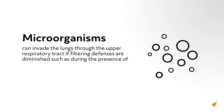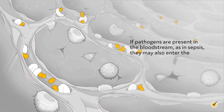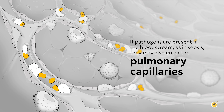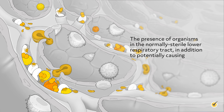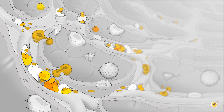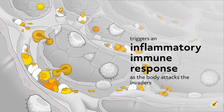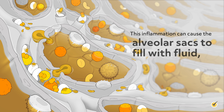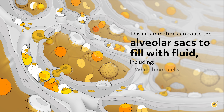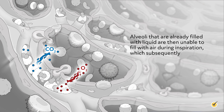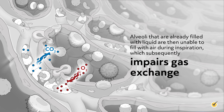Microorganisms can invade the lungs through the upper respiratory tract if filtering defenses are diminished, such as during an upper respiratory tract infection or through aspiration. If pathogens are present in the bloodstream, as in sepsis, they may also enter the pulmonary capillaries. The presence of organisms in the normally sterile lower respiratory tract triggers an inflammatory immune response as the body attacks the invaders. This inflammation can cause the alveolar sacs to fill with fluid, including white blood cells or pus, leaving alveoli unable to fill with air during inspiration, which subsequently impairs gas exchange.